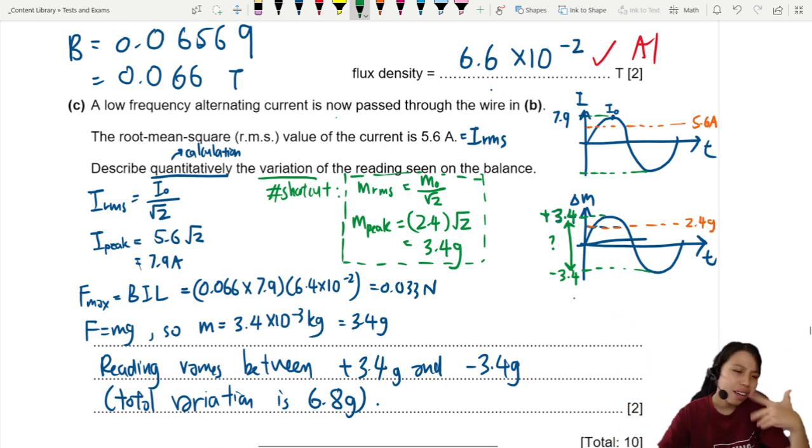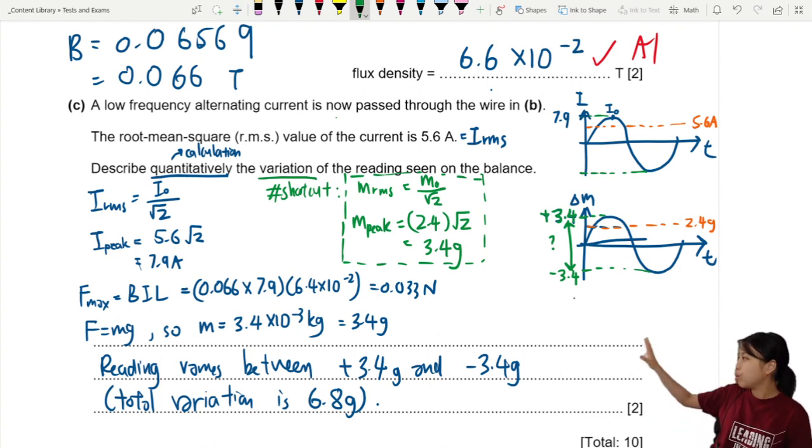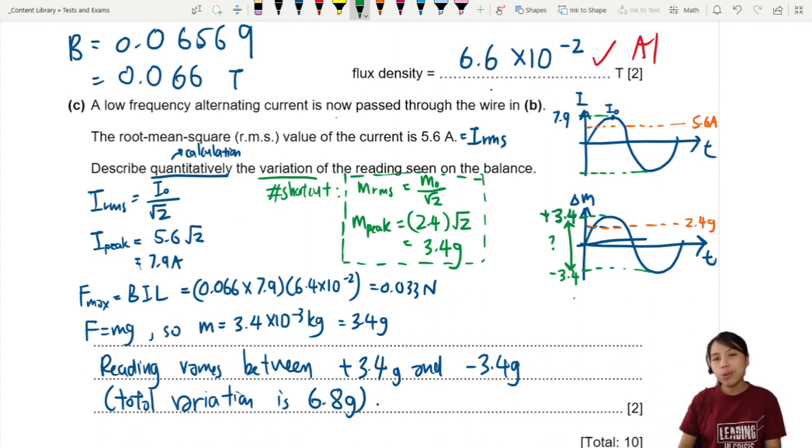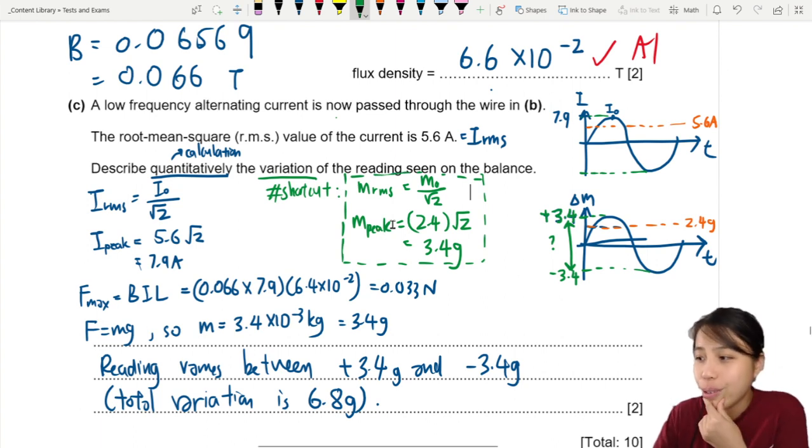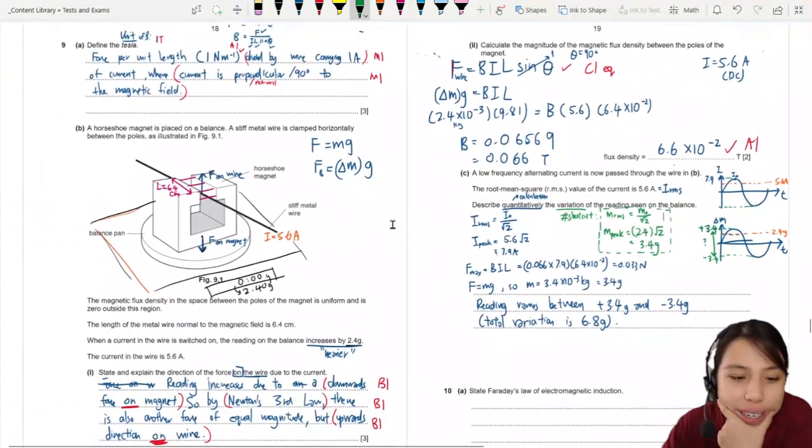So which method you like? I would suggest you to know how to use both. Like doing the full F=BIL sine theta over there but also knowing the shortcut that you can use for anything with the RMS or anything with the sinusoidal pattern. You can do that too. Okay. So I think that is all for this question. It's a good one to revise for current balance experiment. Hope that was helpful in helping understand a little bit more.